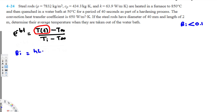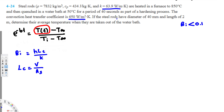To find the Biot number we use the equation: Bi = h·Lc / k, where h is the heat transfer coefficient, k is the thermal conductivity, and Lc is the characteristic length. h is provided, k is provided, but we have to find the characteristic length. To find that, we use the equation Lc = Volume / Surface Area.